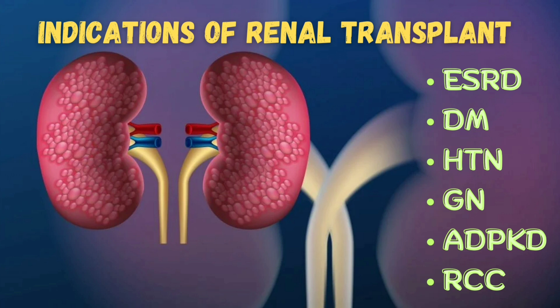The indications of renal transplant include end-stage renal disease secondary to diabetes mellitus, hypertension, glomerulonephritis, autosomal dominant polycystic kidney disease, and renal tumors — especially renal cell carcinoma in adults and Wilms tumor in children — as well as analgesic nephropathy and congenital urinary tract abnormalities.